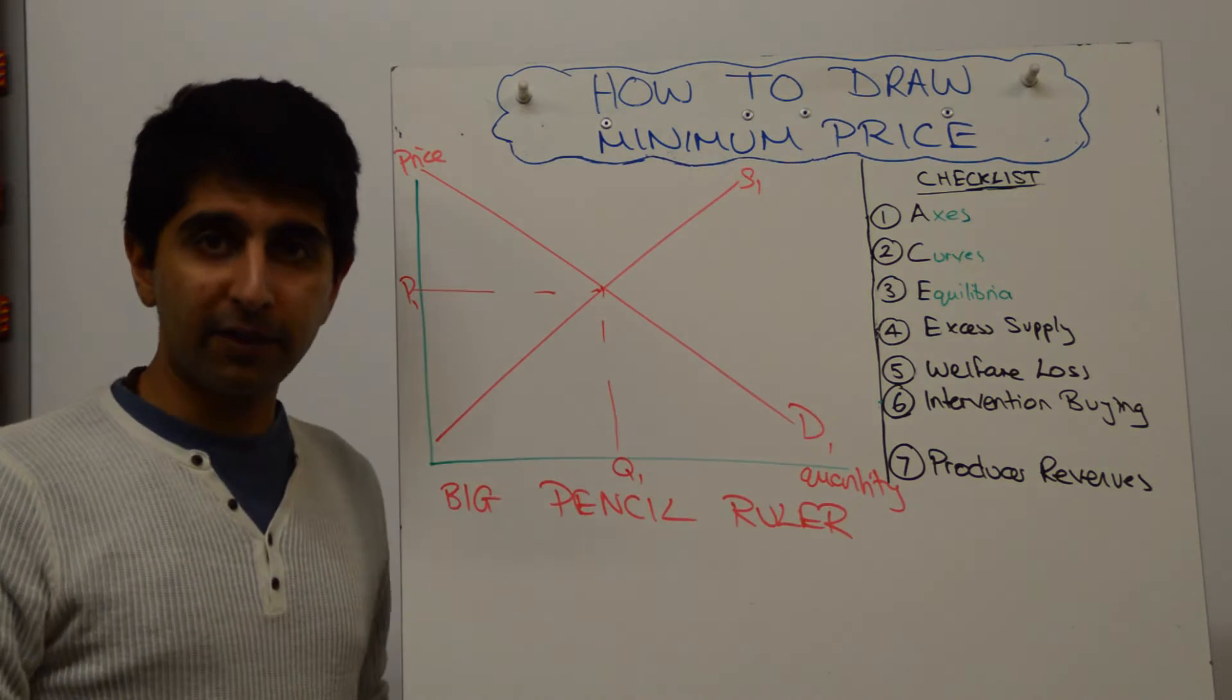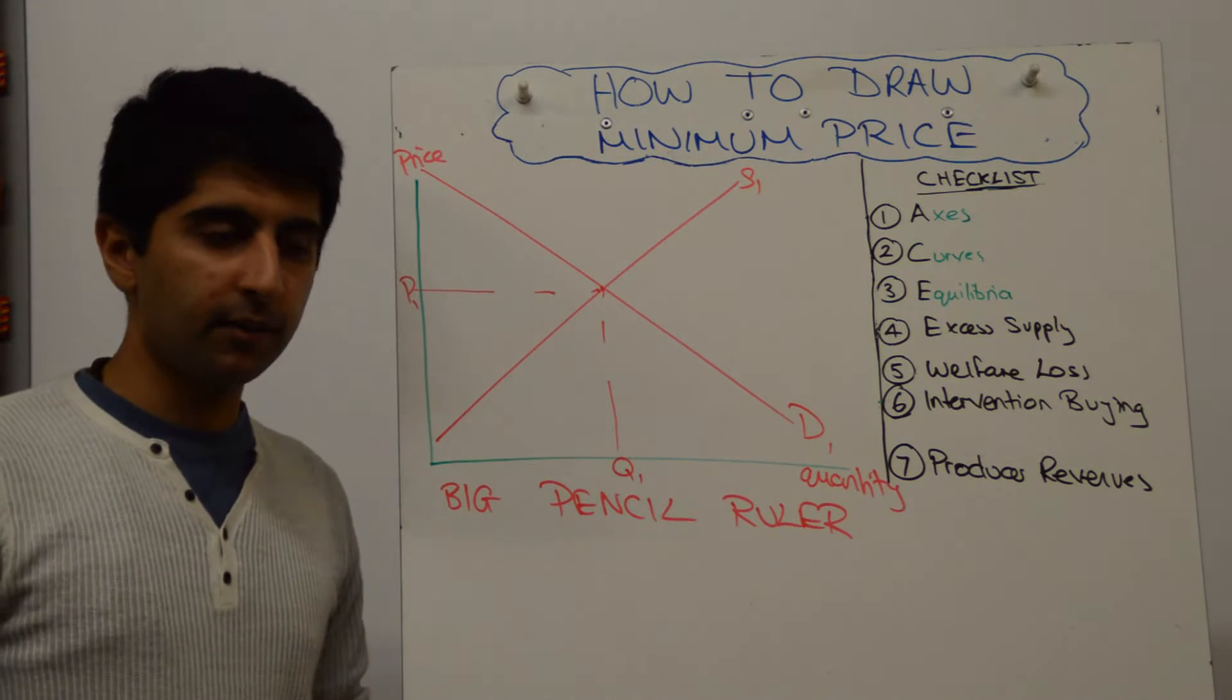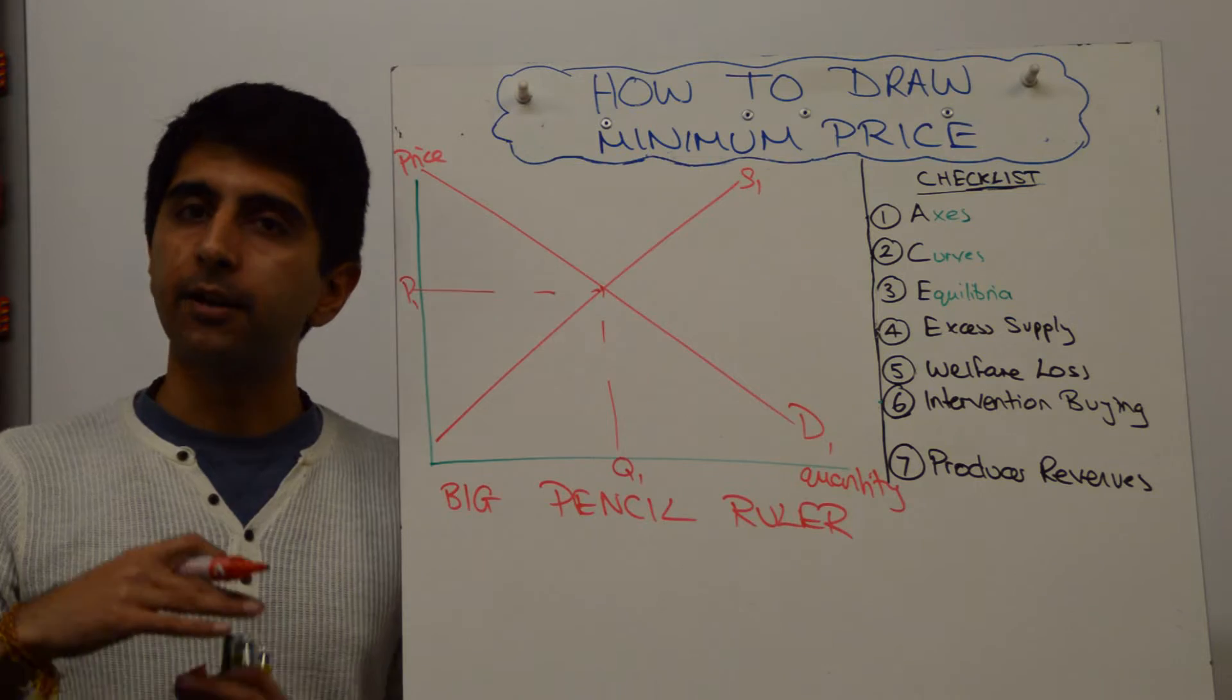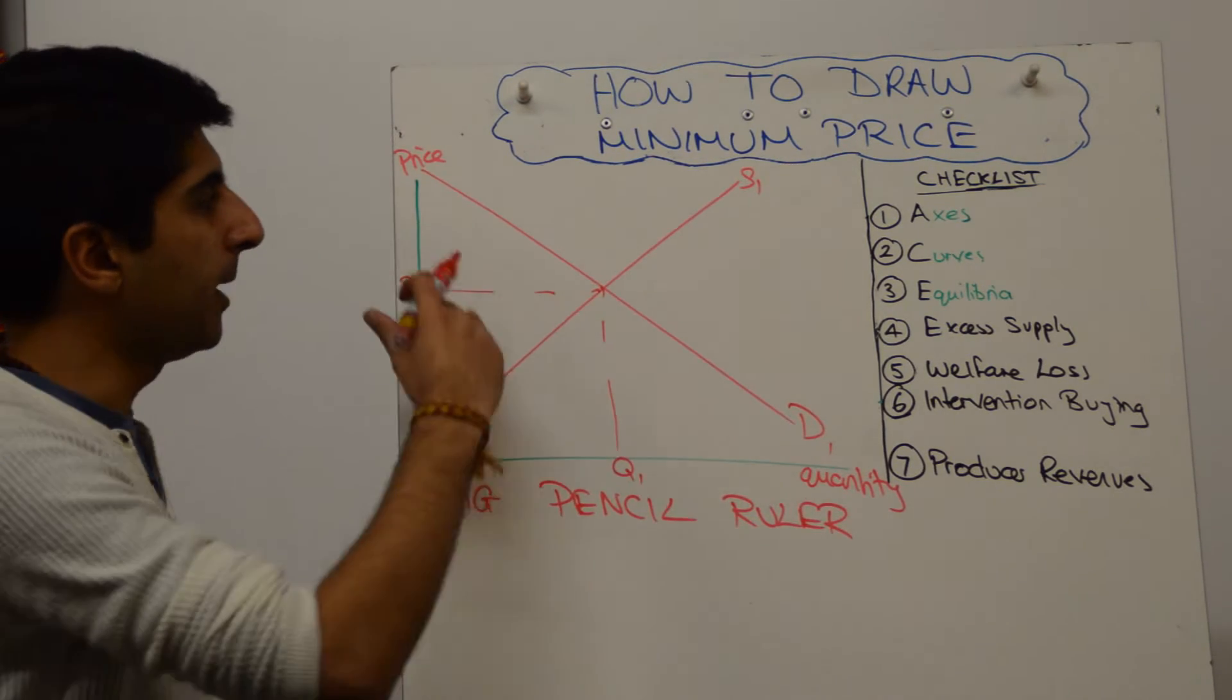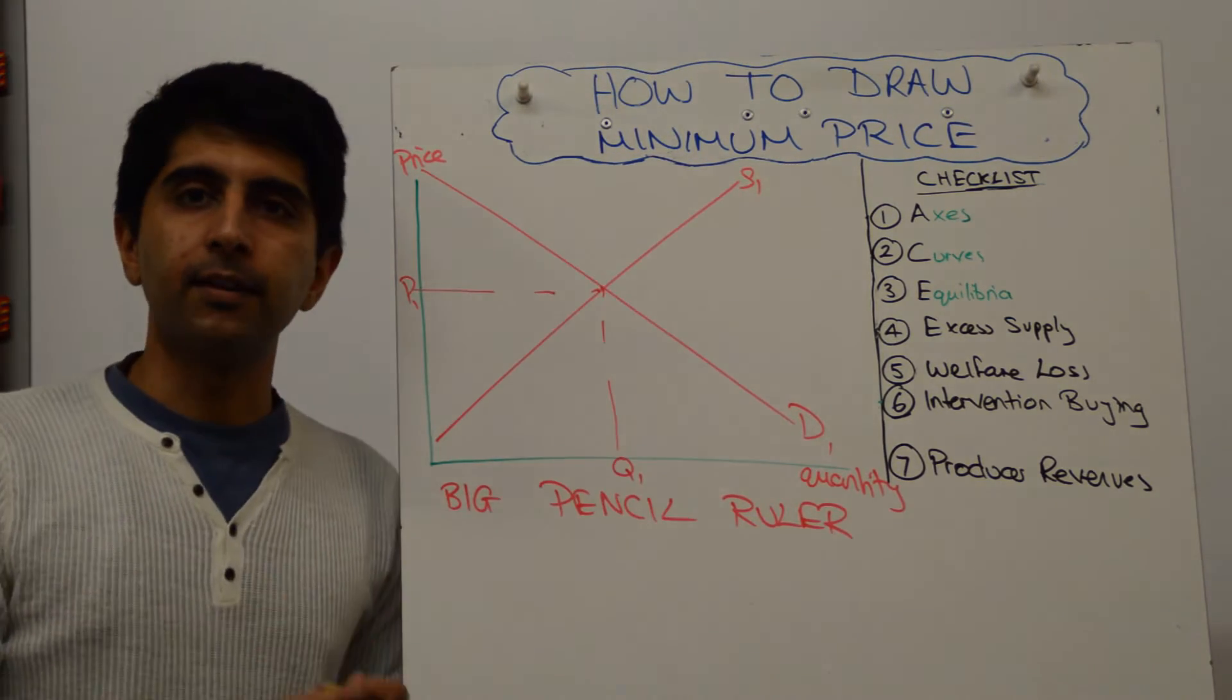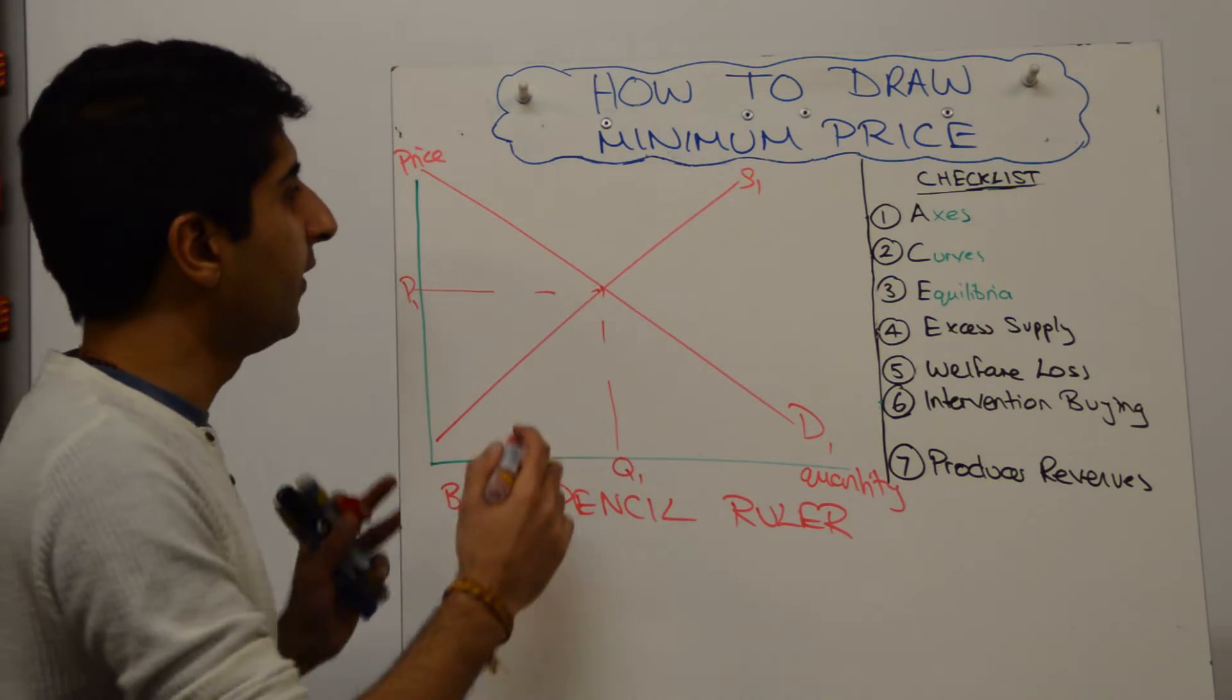Then you want to show the impact of the price floor, the minimum price, and that will usually be set above the equilibrium price, implying that the current price in the market is too low to support farmers or to support producers. Maybe the price is set higher to deter consumption, whatever, but the minimum price is normally going to be above the equilibrium price.